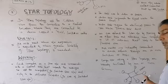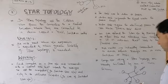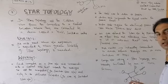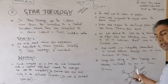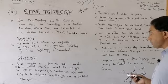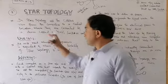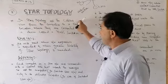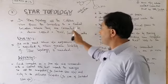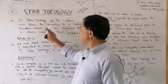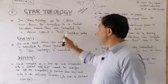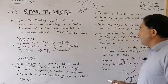In Star Topology, all the cables run from the computers to a central location, where they are connected by a device called a hub, switch, or router. All the cables are connected through this central location.